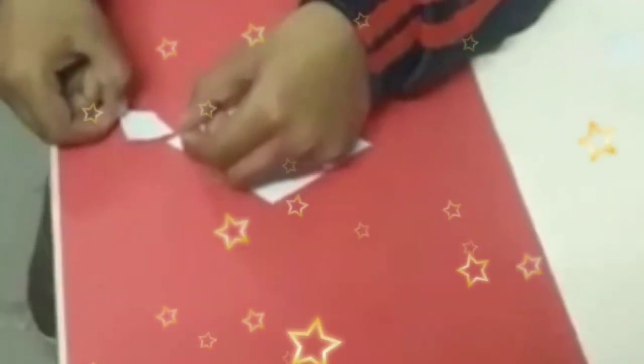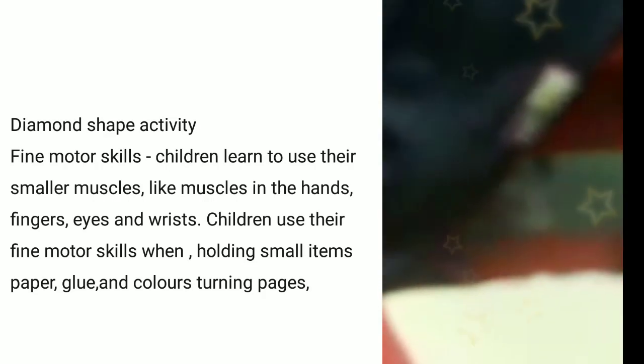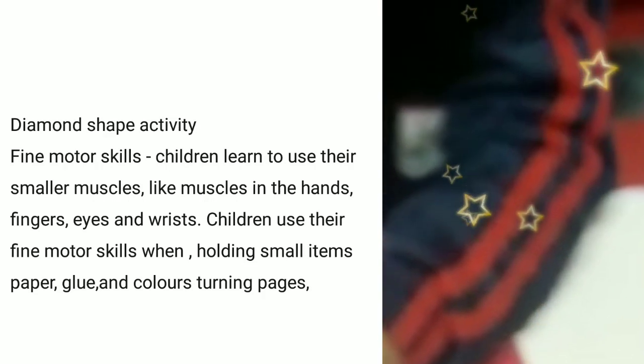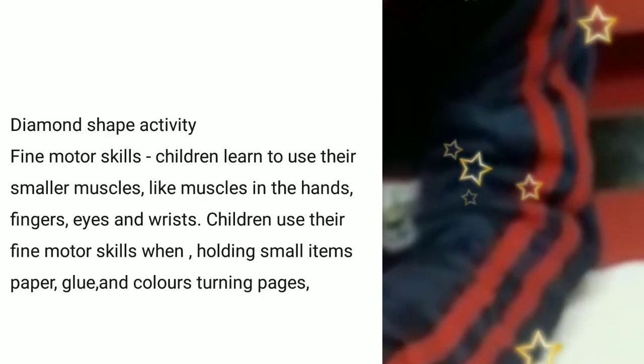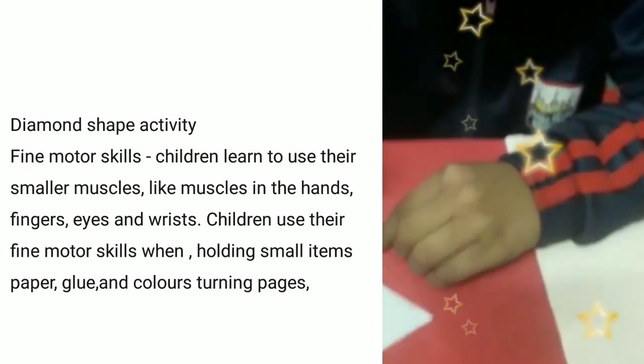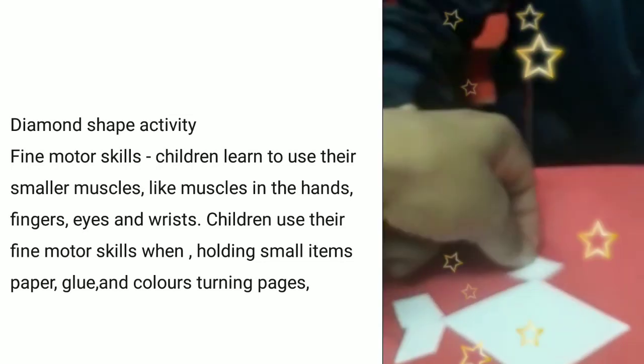There's a rhombus right here, there's a rhombus right there. Rhombus, rhombus, rhombus everywhere. If four sides are equal, the opposite sides of a rhombus are parallel.